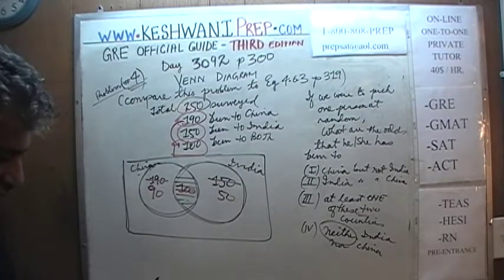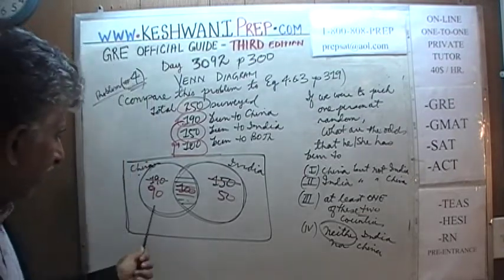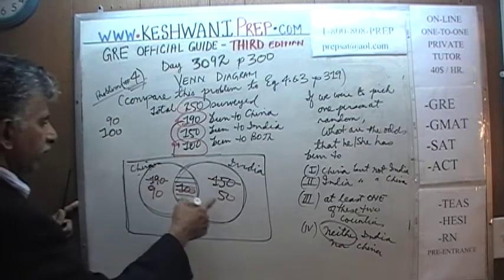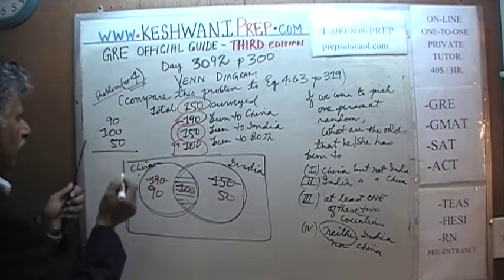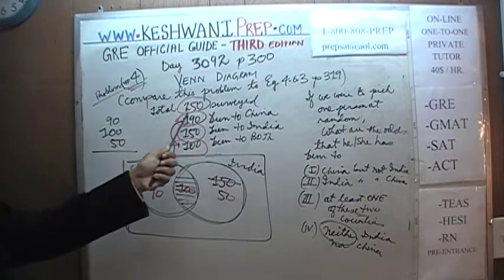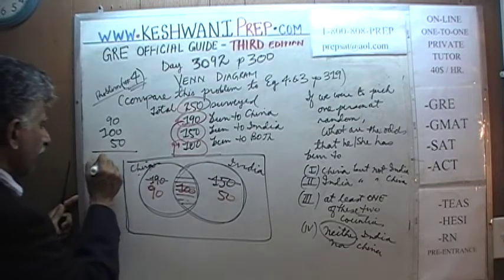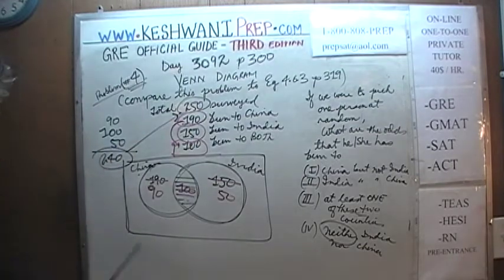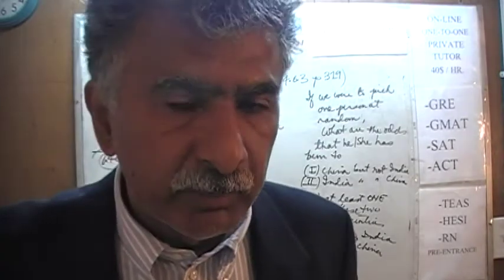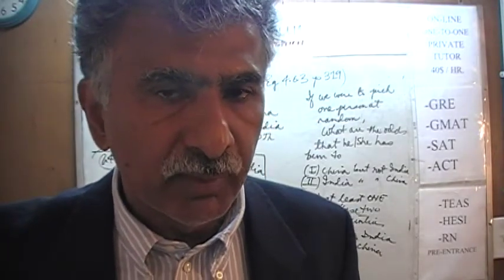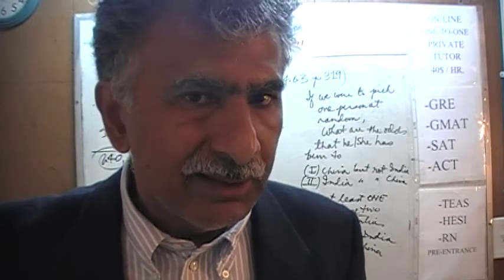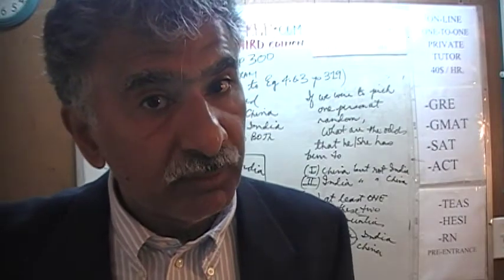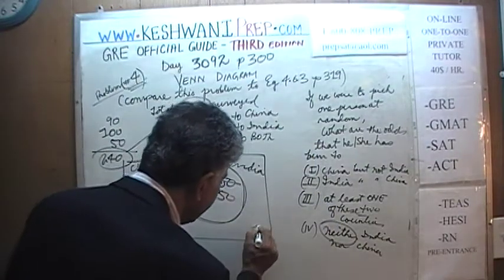Now we can figure out how many have been to neither country by adding up the three figures: 90 (only China) + 100 (both) + 50 (only India) = 240. Since we surveyed 250 total, the remaining 10 people have been to neither country.